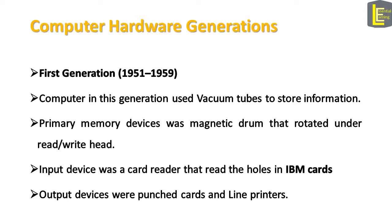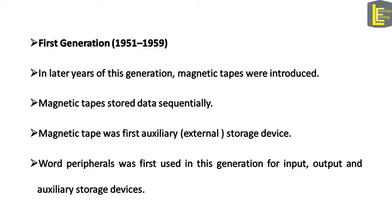In the 1950s, the first commercial computers were introduced. This was the first generation of modern computers, which started from 1951 to 1959. Computers in this generation used vacuum tubes to store information. The primary memory device was a magnetic drum that rotated under a read or write head. The input device was a card reader that read holes in IBM cards — the same cards used in Jacquard's loom. The output device was punched card and line printers. In later years of this generation, magnetic tapes were introduced. Magnetic tapes stored data sequentially and were the first auxiliary or external storage device for a computer. The word peripherals was used in this generation for input, output, and auxiliary storage devices.